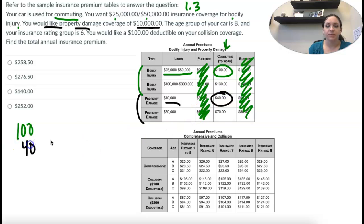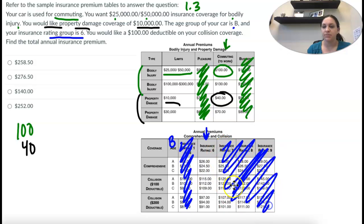The age group of your car is B, so we're always going to pick the middle number, and your insurance rating group is six. So here's all our insurance columns, this one is the one we're going to use, six. So I'm going to ignore all these other ones. You would like a $100 deductible on your collision coverage, so here's collision, we're going to pick $100, age group B, so it's the middle number, it's going to cost $112.